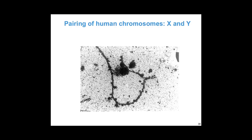You can see that they're unequal. That's because the large chromosome here is the X chromosome, and this tiny little wimpy chromosome, responsible for most of the problems in the world, is the Y chromosome. At least that's what my wife tells me.